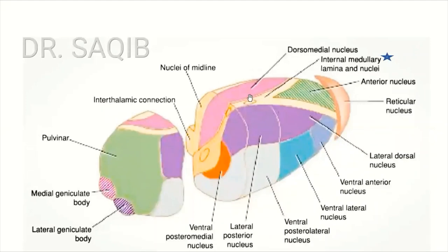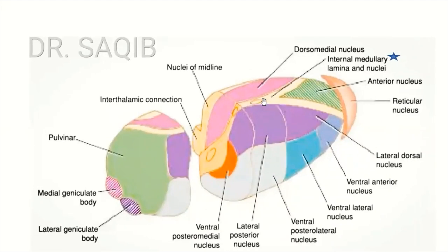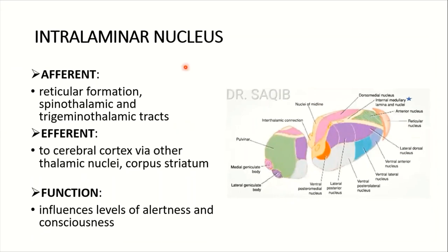The intralaminar nuclei lie within the internal medullary lamina. Their afferents are from the reticular formation and the spinothalamic and trigeminothalamic tracts. Efferents go to the cerebral cortex via other thalamic nuclei and to the corpus striatum. Their function is to influence the level of alertness and consciousness.